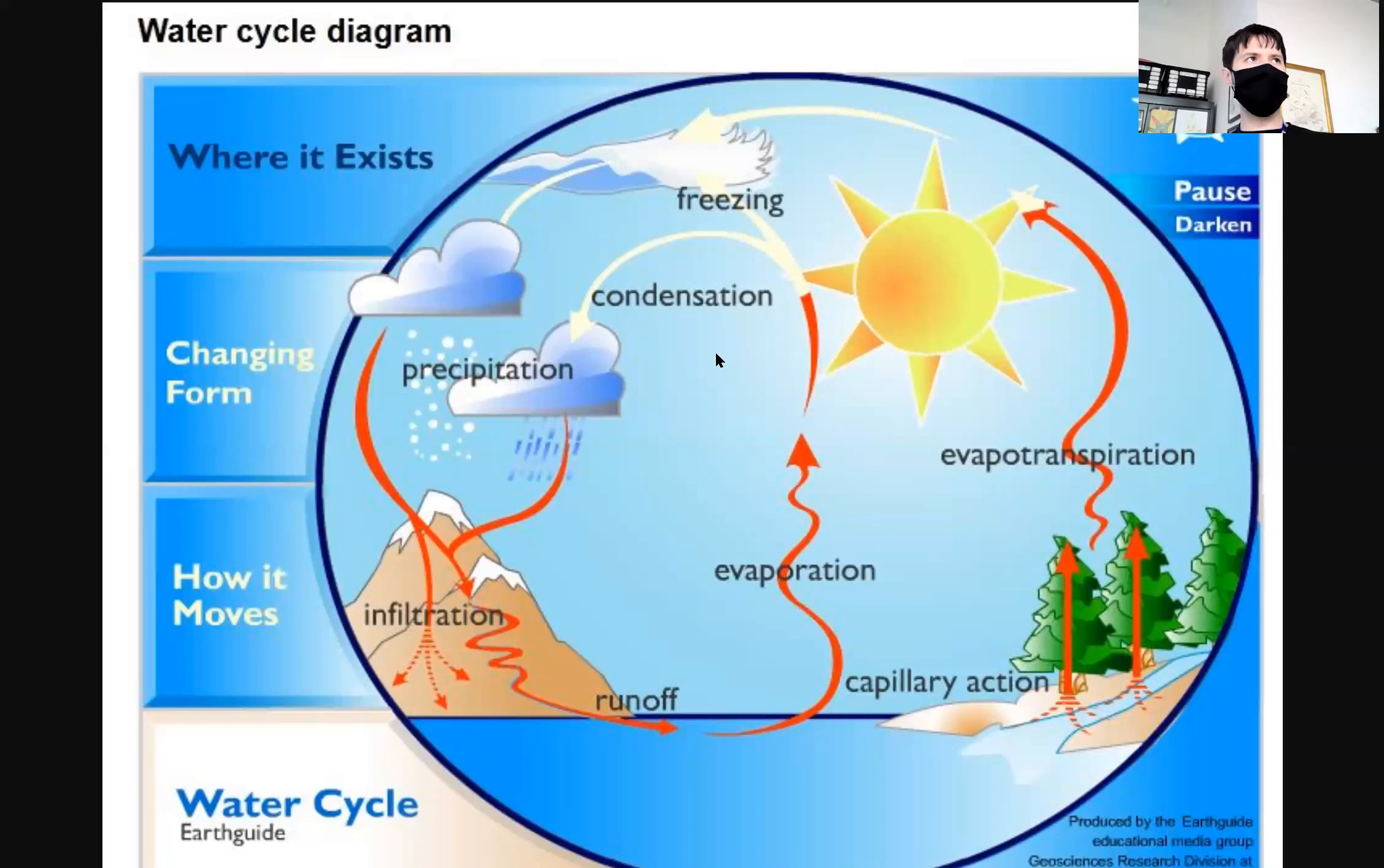Condensation is when water vapor goes to becoming liquid water. So evaporation is liquid water to water vapor, condensation is water vapor to liquid water. Remember that's when we said that it takes some dust particles - water has to find something to stick to in the sky in order to make a cloud. Which means that clouds are not made of water vapor, they're made of liquid water.